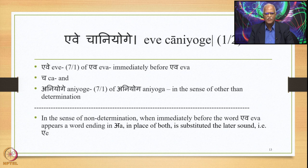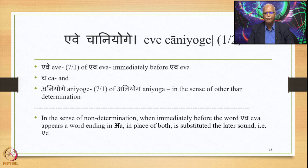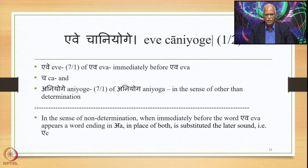Let us study Ewe Chani Yogi first. This Vartika has three padas: Ewe, Cha, and Aniyogi. Ewe is 7/1 of Ewa, and stands for its own form, so Ewe means immediately before the word Ewa. Cha means 'and.' Aniyogi is 7/1 of Aniyogi — Niyogi means determination, so Aniyogi means absence of determination, or other than determination.